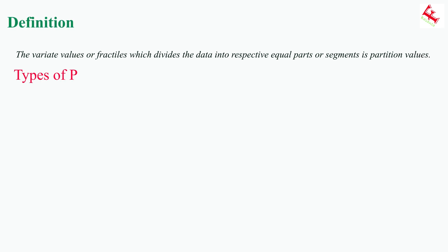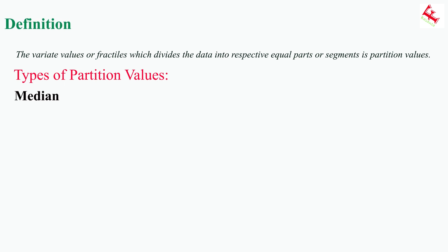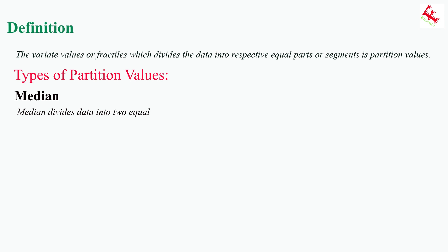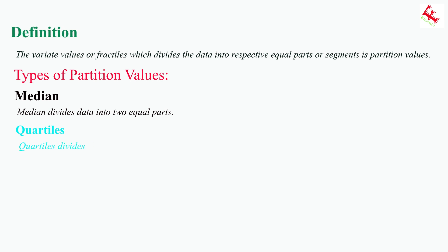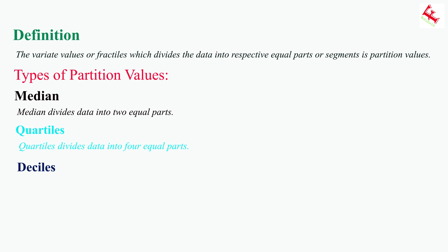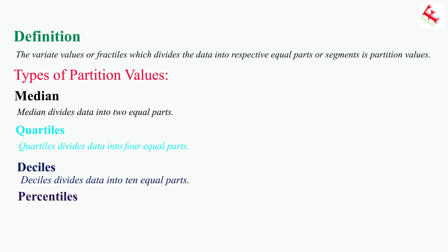Types of partition values: Median divides data into two equal parts. Quartiles divide data into four equal parts. Deciles divide data into ten equal parts. Percentiles divide data into hundred equal parts.